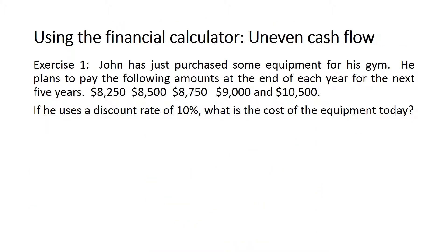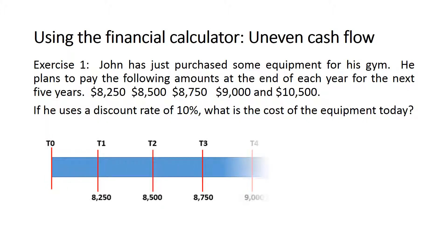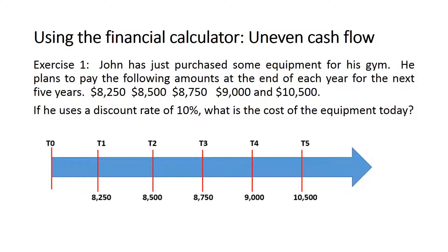The third and last part of this video is about using the financial calculator to solve these problems. Looking at exercise one again — uneven cash flows, a discount rate, solving for present value. Using a timeline, the first payment of 8,250 at t1 is a future value. Enter FV = 8,250, number of time periods N = 1, interest rate I = 10%, and solve for PV, which gives 7,500.